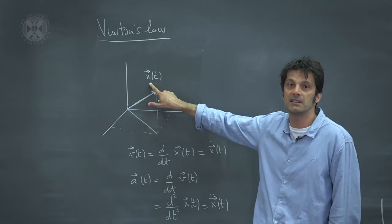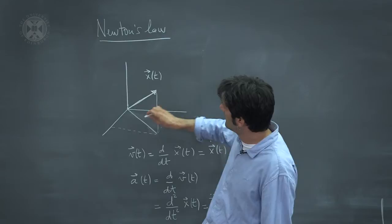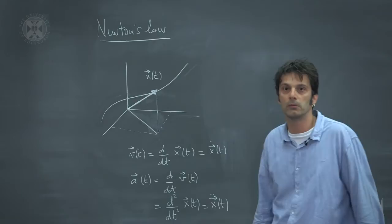The state of our system is simply given by a three-dimensional vector, which we are going to call x. As the particle moves and evolves in time, this vector x will sweep some trajectory, and that is the motion that we want to describe through Newton's equations.